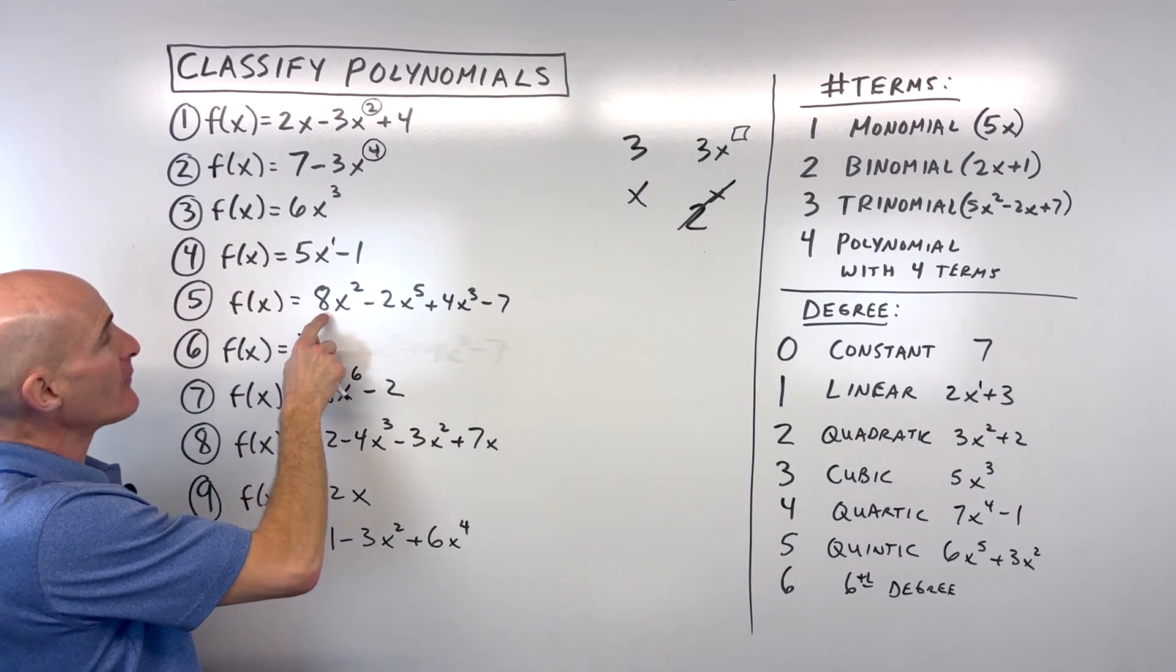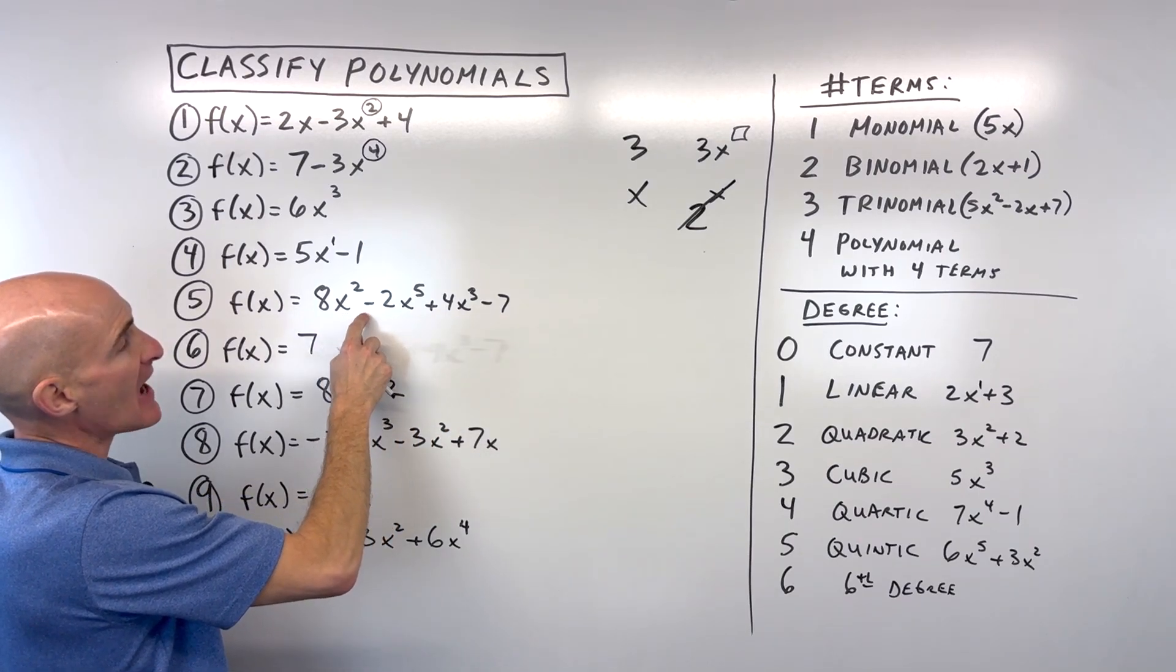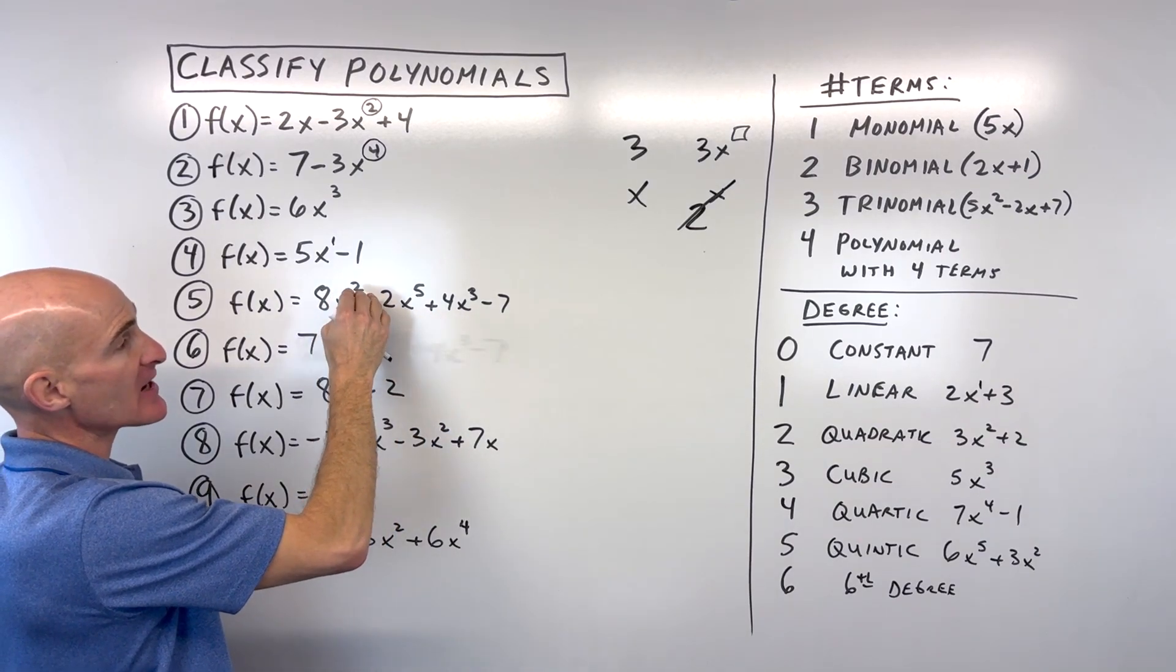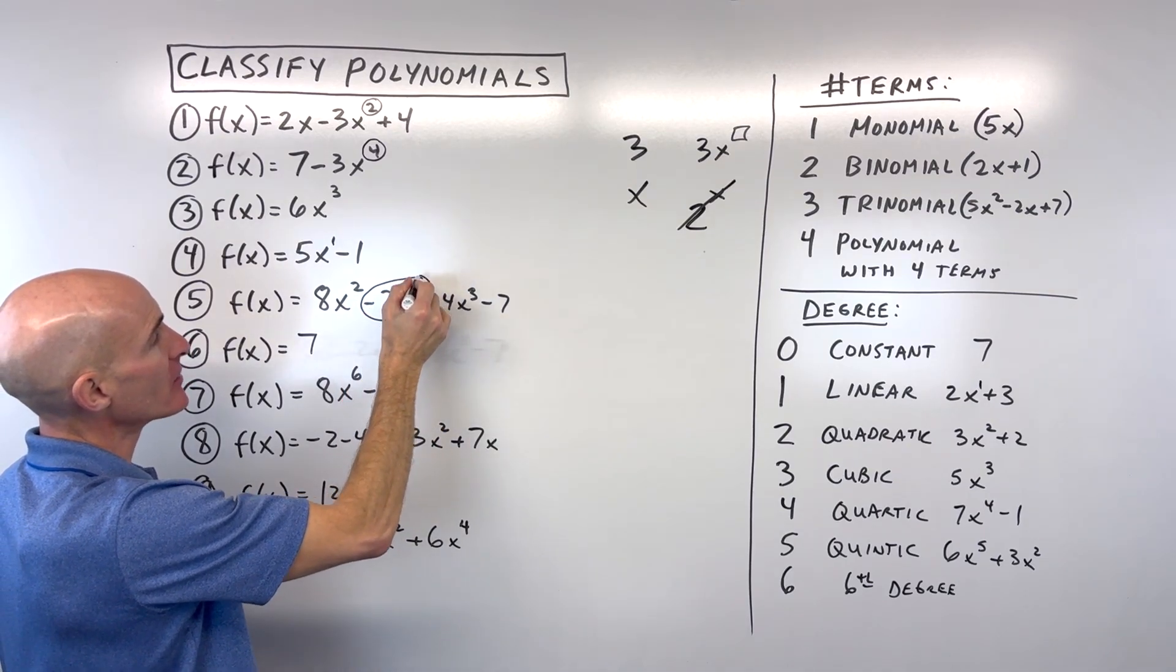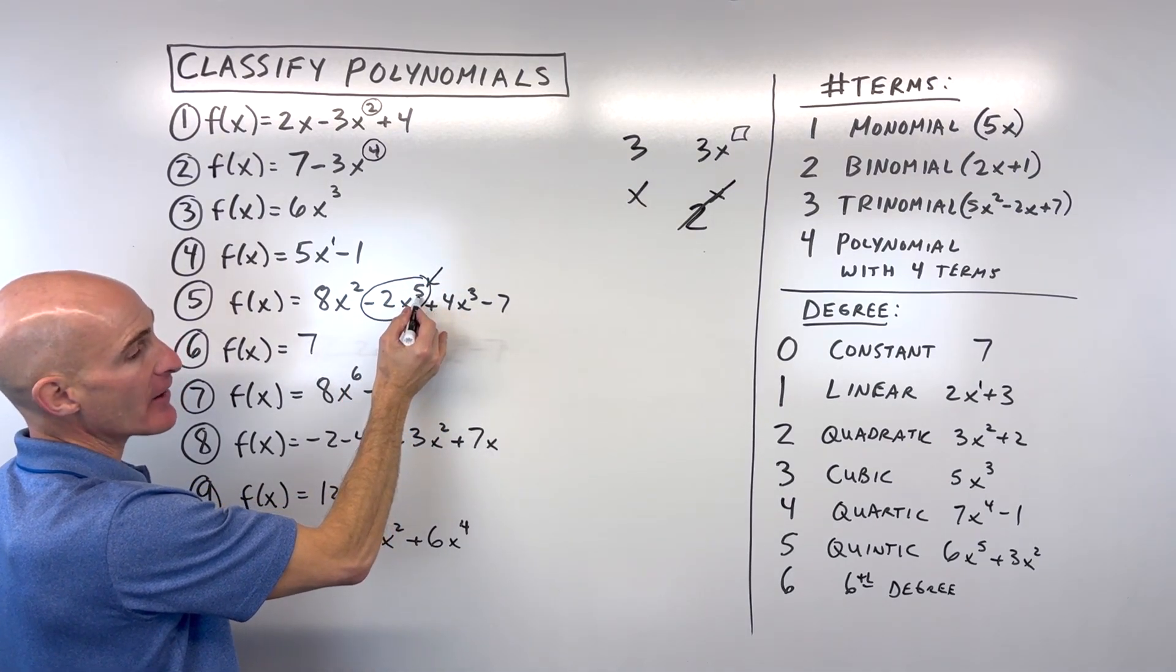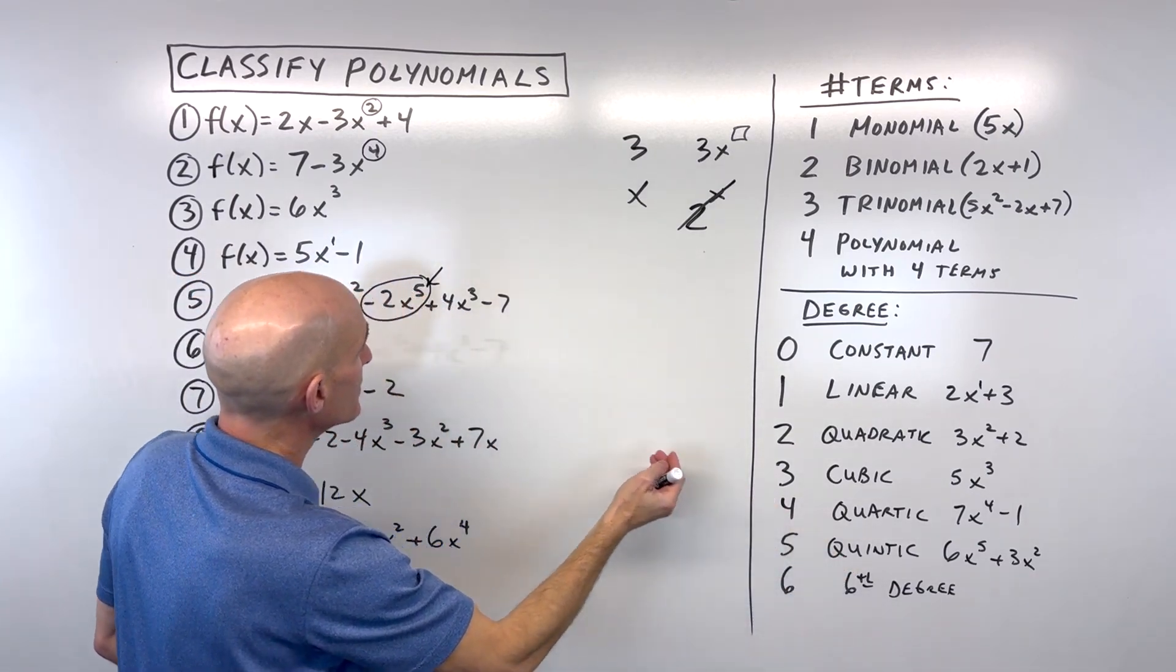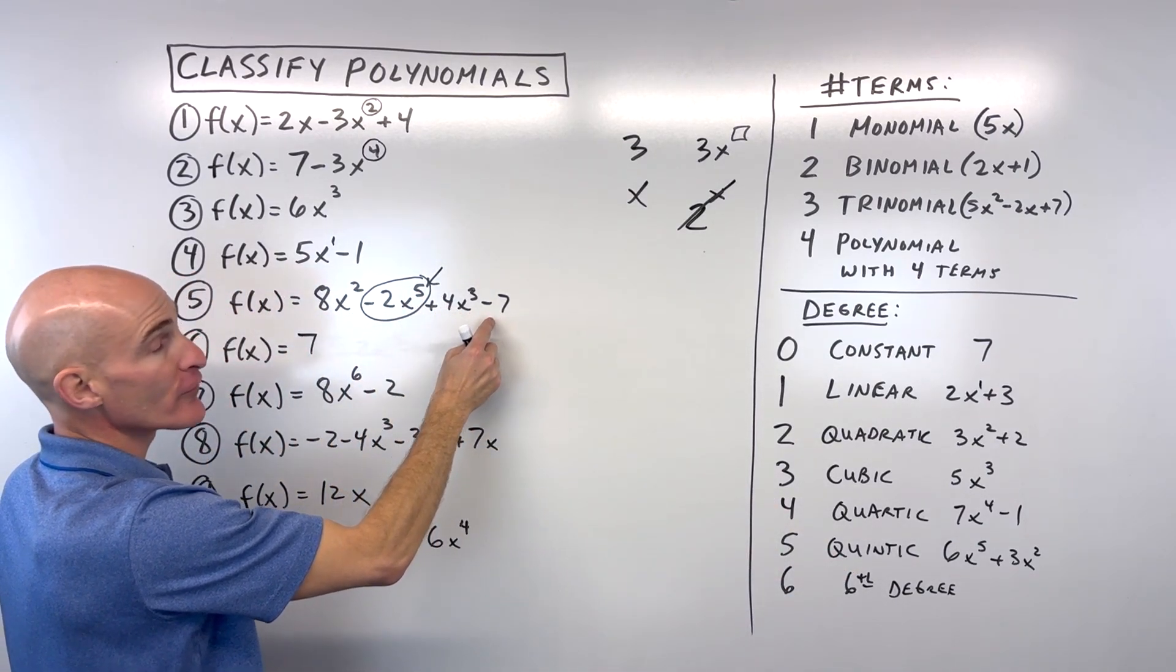For number five, what do you think for this one? Well, this one's not in standard form. Usually you want to write it from the highest power down to the lowest. So it looks like our highest power term is this guy right here. Notice that degree is 5. So we're going to call it a quintic polynomial with four terms.